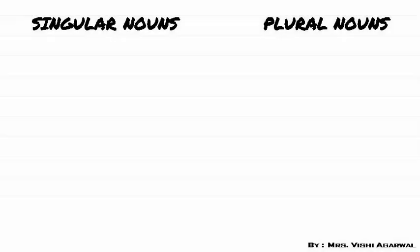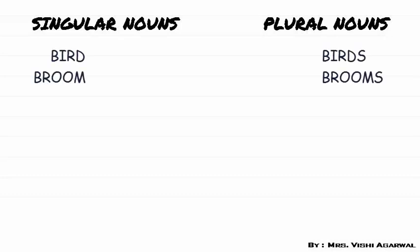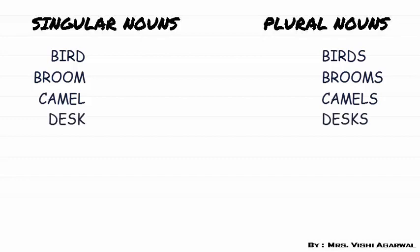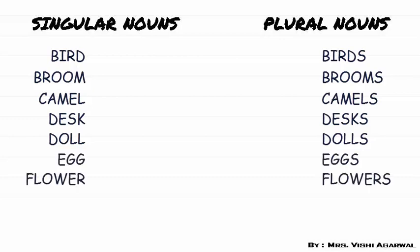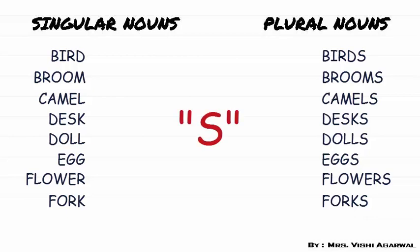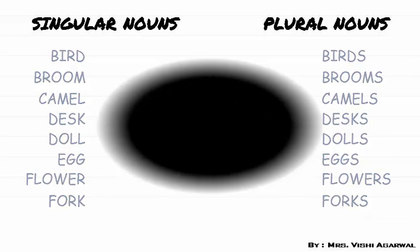Now some more examples of changing singular to plural: bird becomes birds, broom becomes brooms, camel becomes camels, desk becomes desks, doll becomes dolls, egg becomes eggs, flower becomes flowers, folk becomes folks, and many more. In all these words you can see that we have added only S at the end of the word to make it plural.